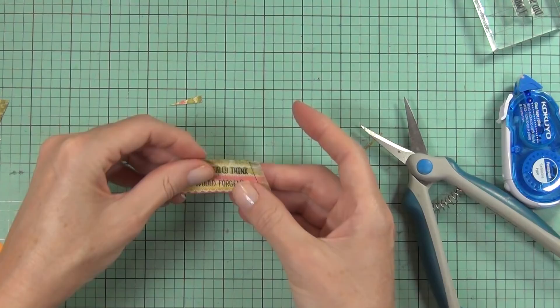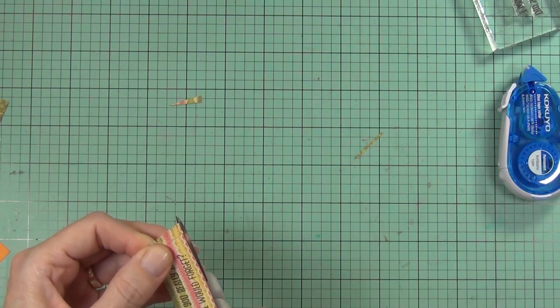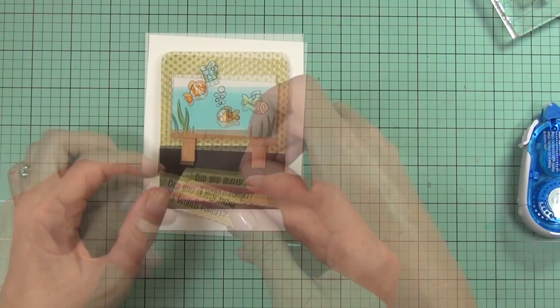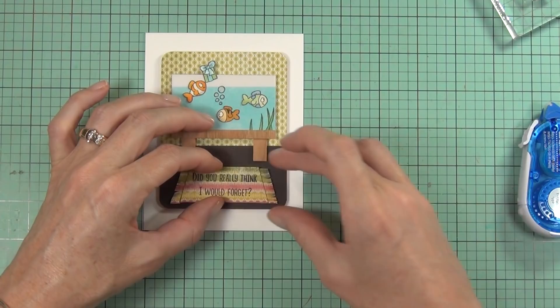And I wanted something that you could see the sentiment on after I'd stamped it. If it was too busy you wouldn't be able to see it. So I just popped my little mat up on the front of my card and that's my finished card for today. Thanks for joining me.